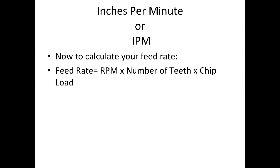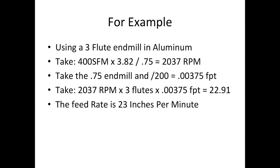For our inches per minute — to calculate our feed rate — now that we know our RPM, we take that times the number of teeth or flutes, and multiply by our chip load. Using a 3-flute end mill in aluminum: 400 surface feed per minute times 3.82 divided by 0.75 gives us a spindle speed of 2037. We divide the 3/4 inch end mill diameter by 200 to get our 0.00375 feed per tooth. Then spindle speed times number of flutes times chip load per flute gives us 22.91, or about 23 inches per minute.